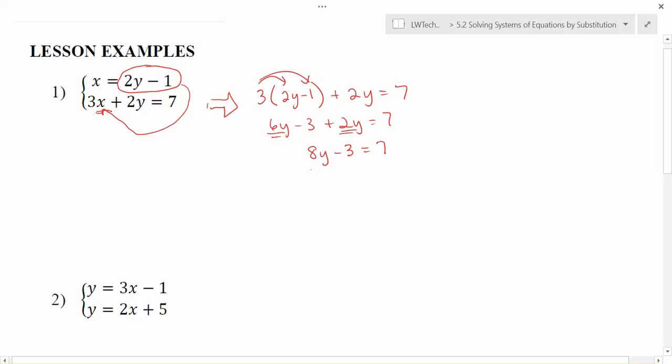Still want to get the y by itself, but now there's only one of them. I'm going to get rid of the minus 3 first by adding 3 to each side. And then I'm going to get rid of the 8 by dividing by 8 on each side. In this case, I'm going to end up with y equals 10 eighths, that will reduce to 5 fourths. We can use this as a nice exact answer in fractional form.